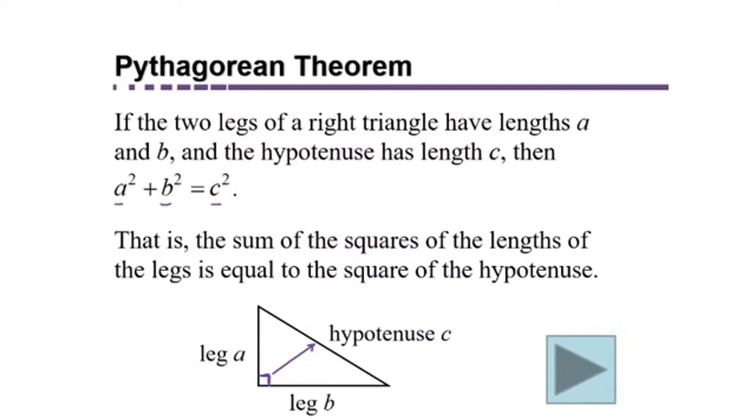If the two legs of a right triangle have lengths a and b, and by legs we're talking about the sides that touch the right angle in the right triangle, and the hypotenuse has length c, and the hypotenuse refers to the side opposite the right angle, which by the way is always the longest side, then the sum of the squares of the lengths of the legs is equal to the square of the hypotenuse.